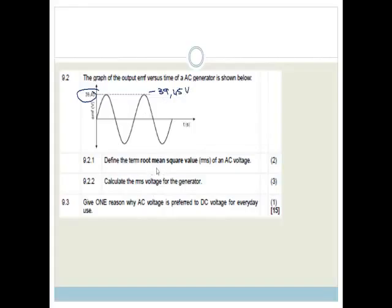It says define the term root mean square value of an AC voltage. You guys have to go and study this. Please go find your exam guidelines and study this. But basically your root mean square value is the average voltage. It's the actual voltage that you get out. Because remember that these peaks get cut off. So it's the average voltage that is supplied to the circuit.